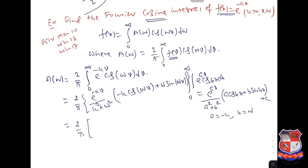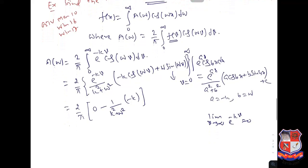When v → ∞, e^(−kv) → 0, so the upper limit contribution is 0. At v = 0, e^0 = 1, sin(0) = 0, and cos(0) = 1, giving −k/(k²+ω²)·(−1) = k/(k²+ω²). Wait — substituting: the lower limit gives (1/(k²+ω²))·(−k·1 + ω·0) = −k/(k²+ω²), negated by the minus sign → k/(k²+ω²). So A(ω) = 2k / (π(k²+ω²)).